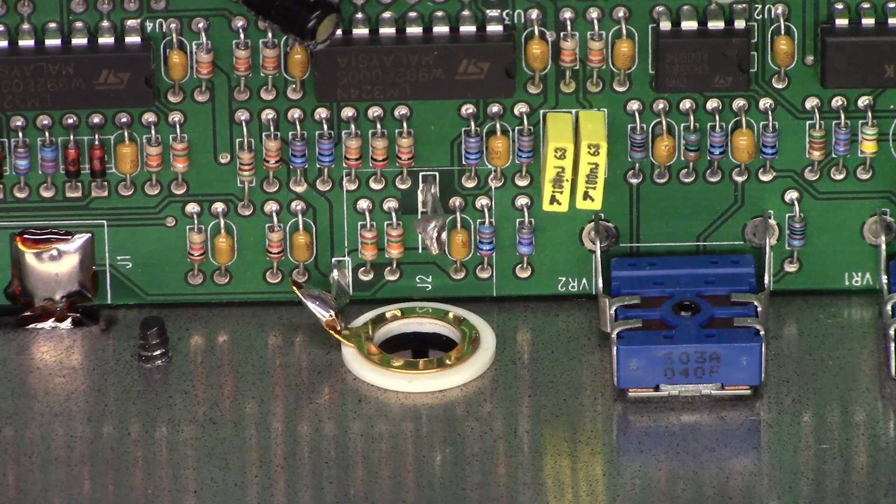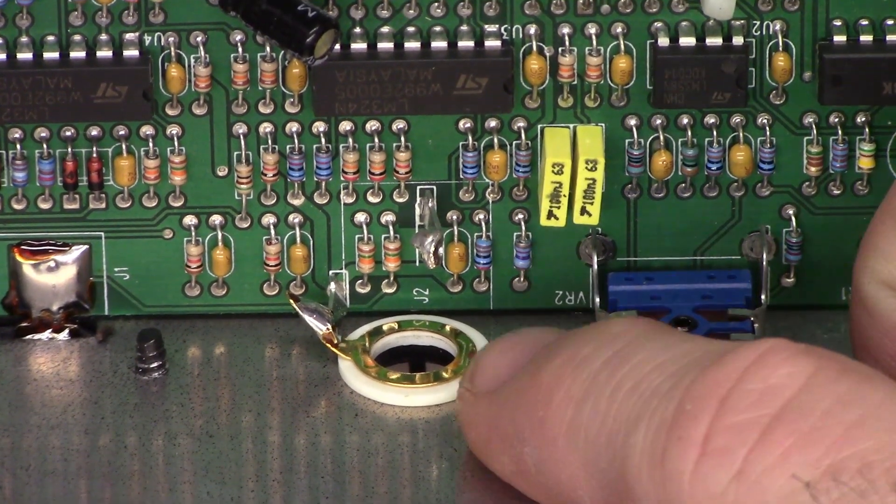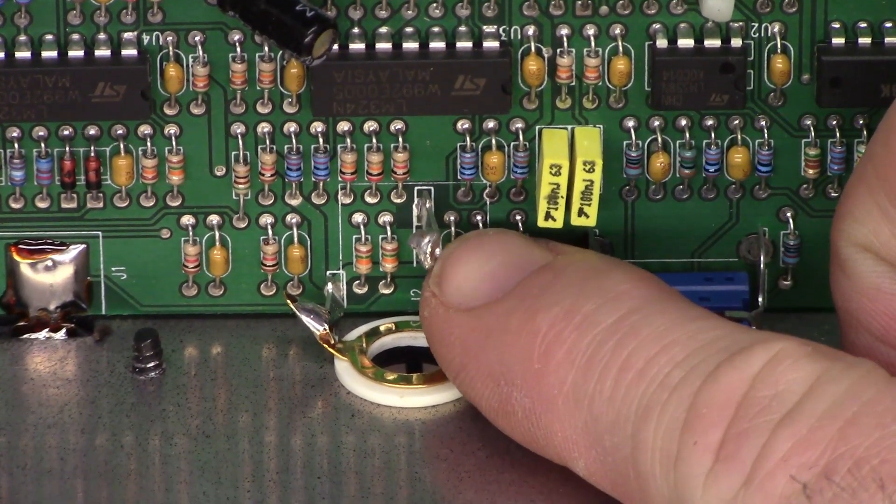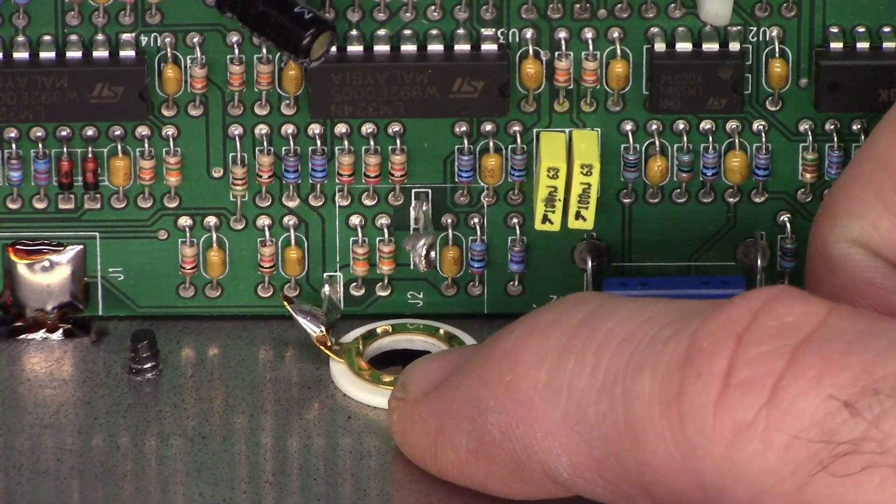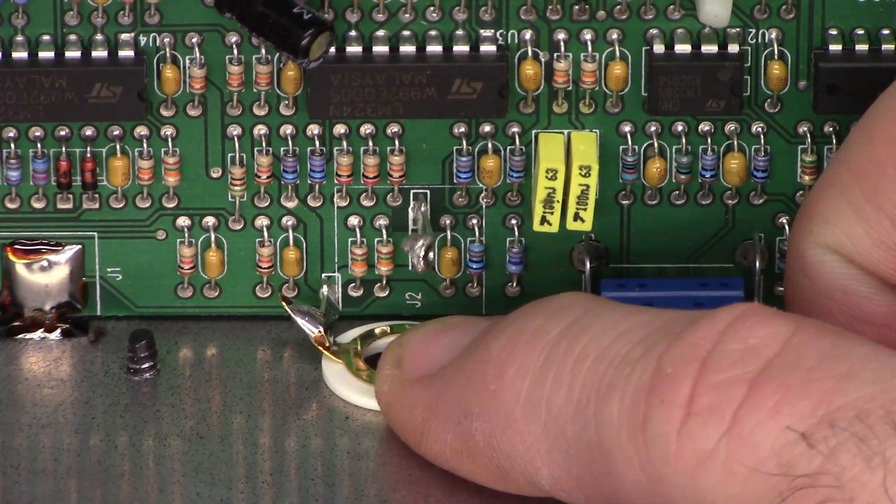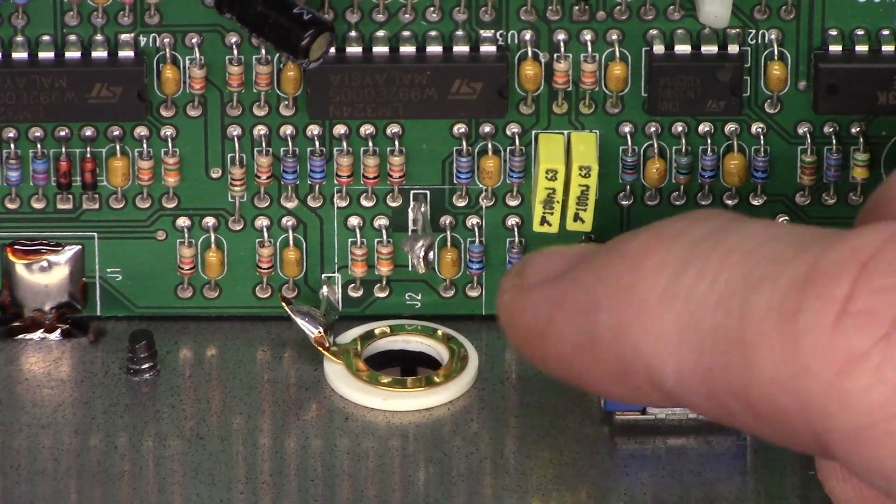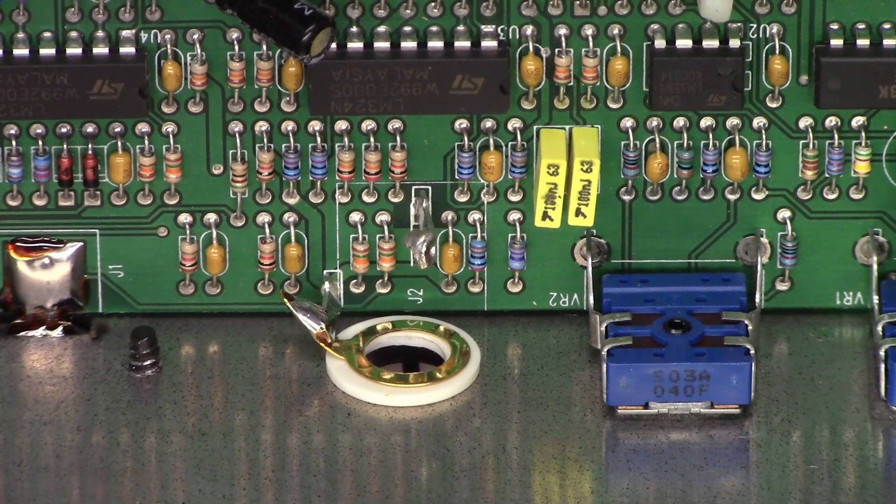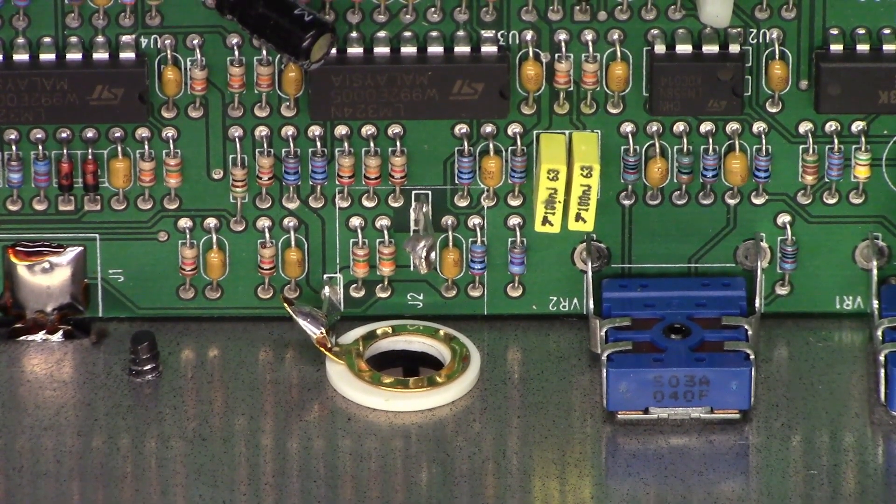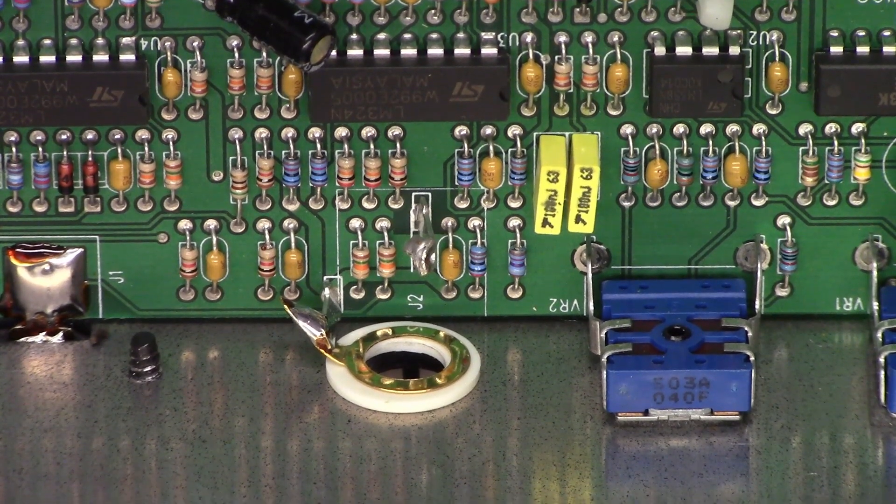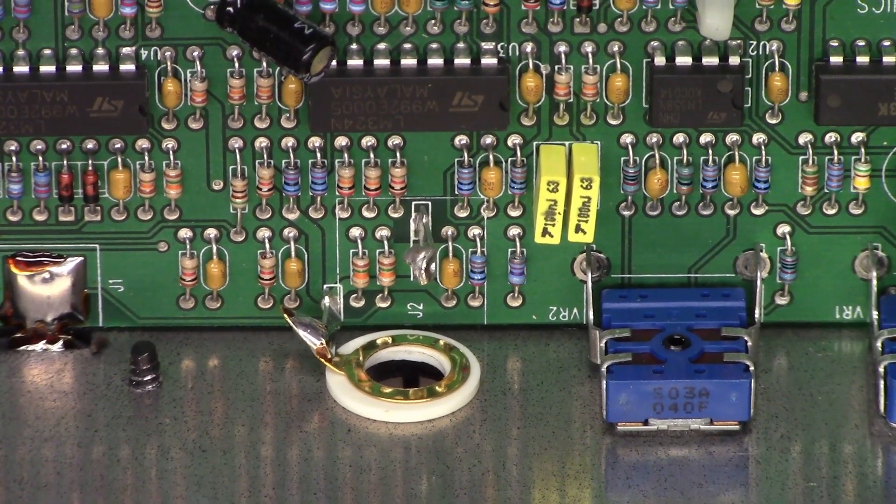All right, so now looking at this, it looks like simply the connector got pulled out. The terminal from the circuit board is still attached, the ground ring is still attached, we just have to find a new connector to put in here. Even the insulator bushing is still there. So I'm going to go look around, dig through my bag of tricks, and see if I can find a replacement connector for it. It should be a very straightforward repair at this point.